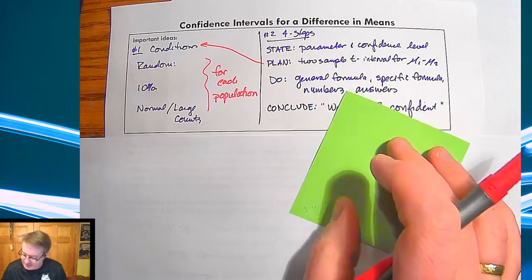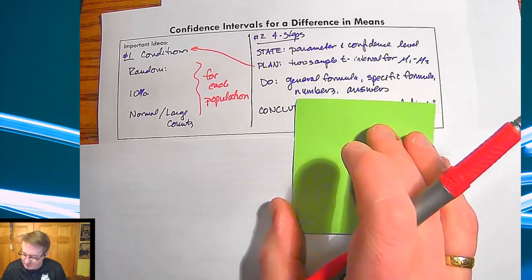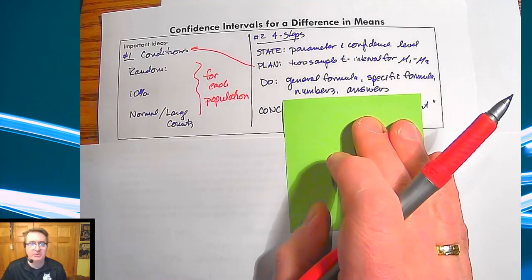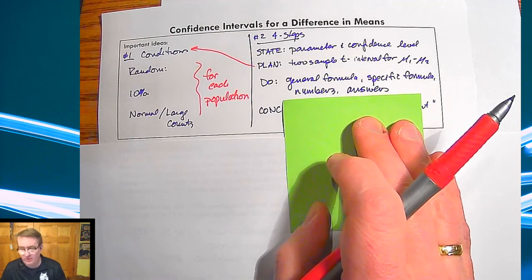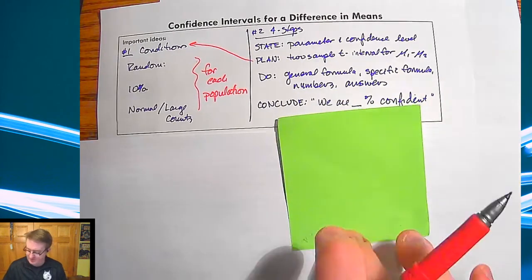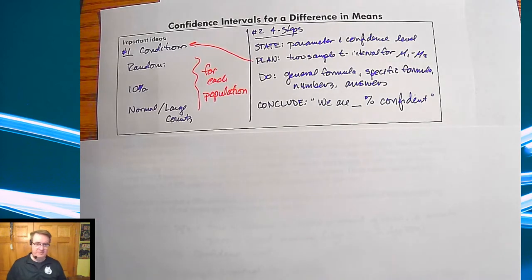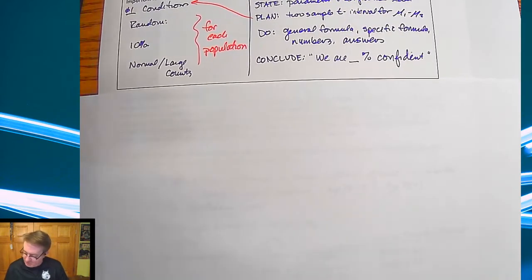For Do, same basic thing: we need general formula, specific formula, the numbers/work, and then show your answers there. And then last but not least, conclude it up with we are 95% confident to that. I think I've got a link down to the scripts that I use for that down below, but if not, remind me and I can go ahead and get that set up.